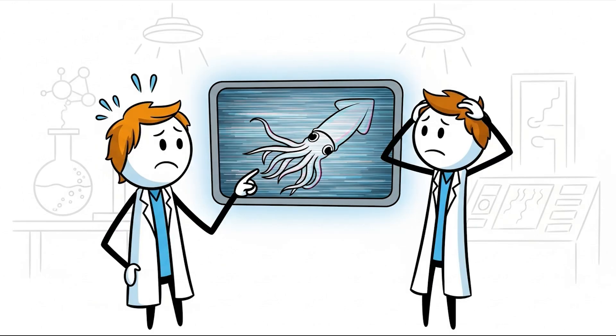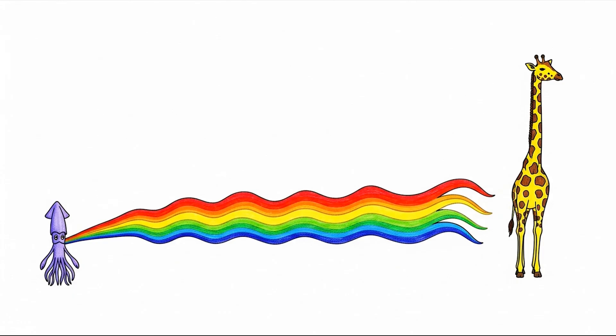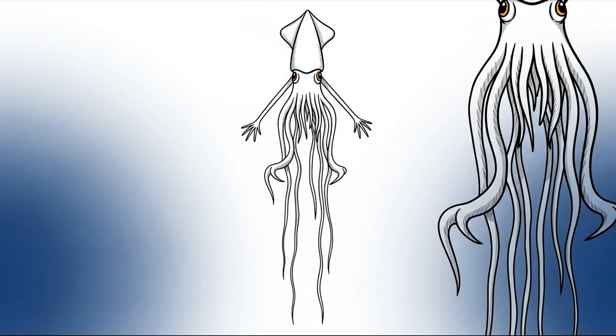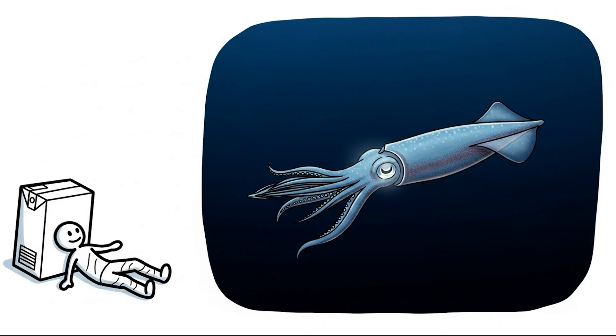The alien from the deep, the big fin squid. This thing looks like it crawled straight out of a sci-fi horror movie. When scientists first spotted the big fin squid with their deep-sea cameras, they genuinely thought their equipment was malfunctioning. Its body is relatively tiny, but it possesses arms that can stretch an incredible 20 feet long, longer than a giraffe is tall. These arms don't bunch up like normal squid tentacles. Instead, they hang down like creepy, impossibly long strands, complete with bizarre, elbow-like bends.